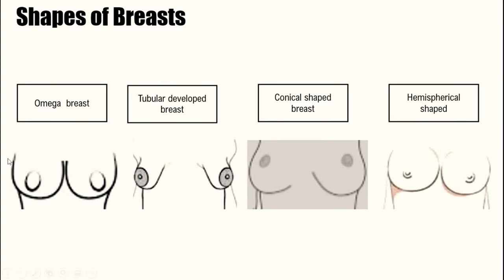We have omega shaped breasts — here the breasts are very large and narrow from the roots, round and well shaped, resembling the omega symbol. We also have tubular shaped breasts, which are caused by a medical condition, so if you have a tubular shaped breast you should consult your doctor. These breasts are very small, have little fullness, are narrow and short, the roots are short, and the two breasts are spaced far apart on the chest.